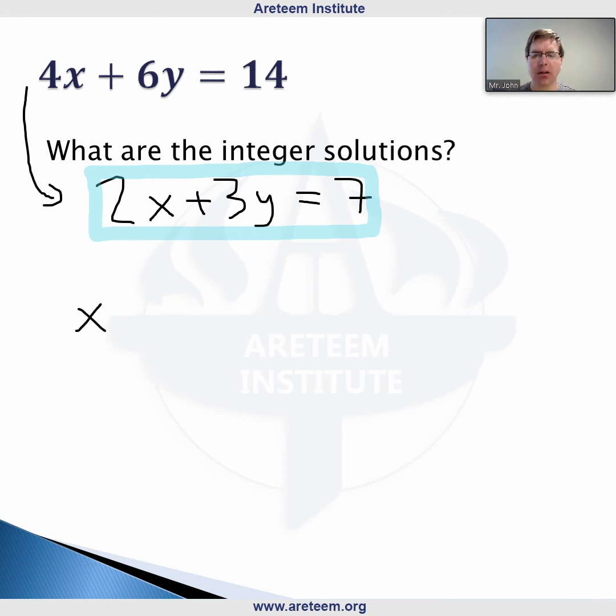We start by looking for an initial solution. There are some general methods for finding those solutions, but typically it's easiest to just guess. You look at this: we have 2s and 3s, how can we make them equal 7? Well, 7 isn't a multiple of 3, but if we subtract 3 from 7 we get 4, which is 2 times 2.